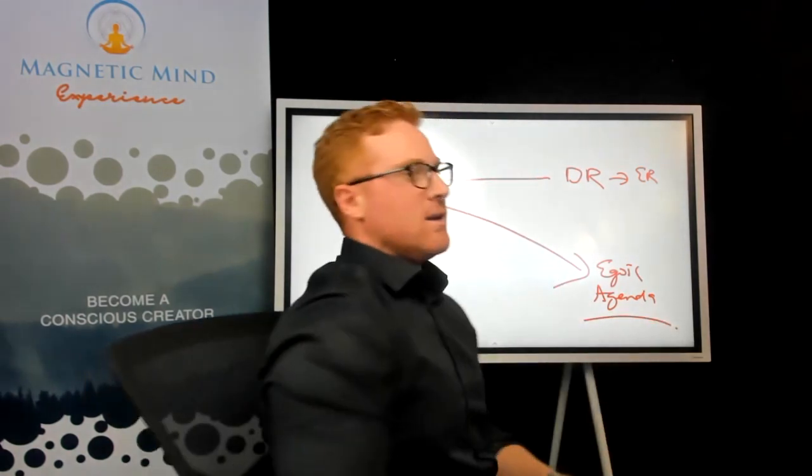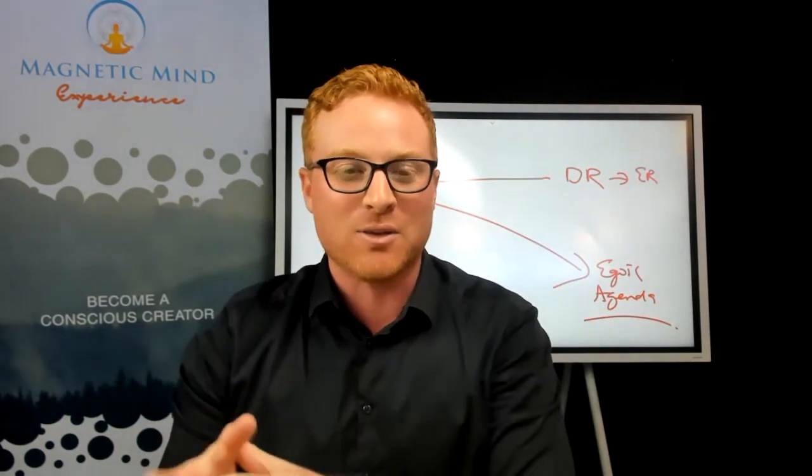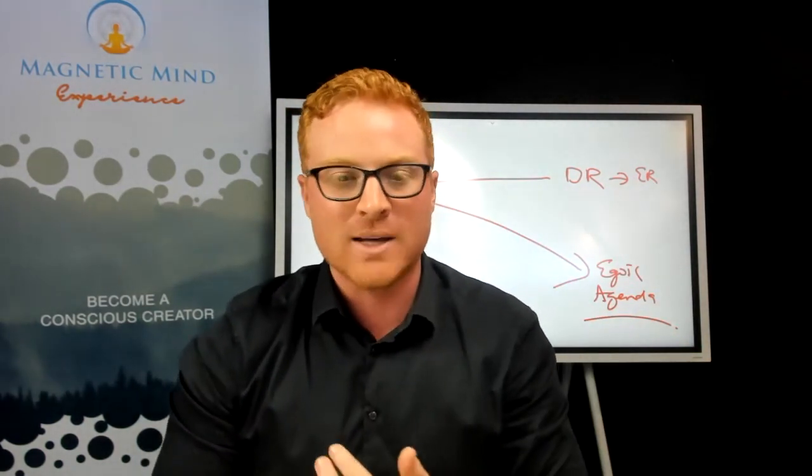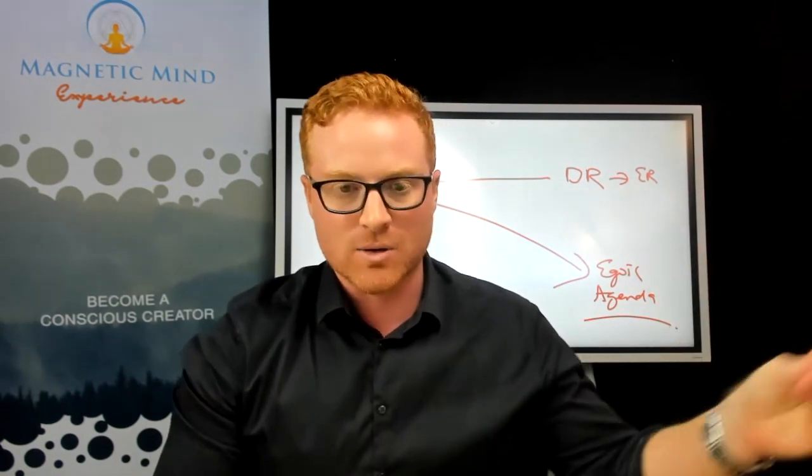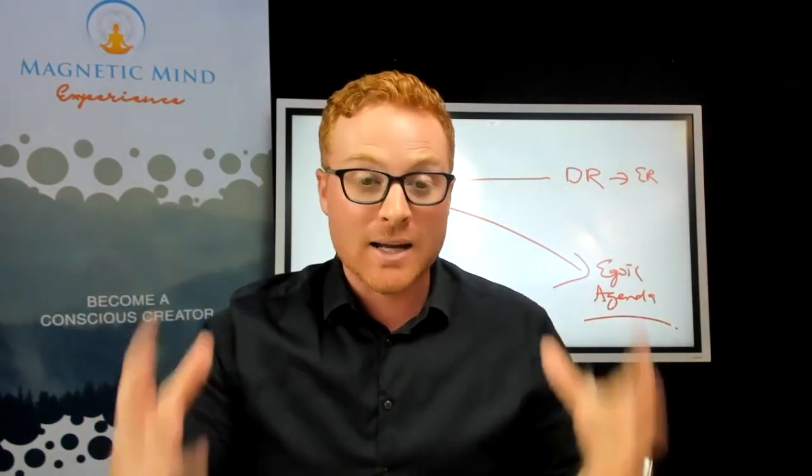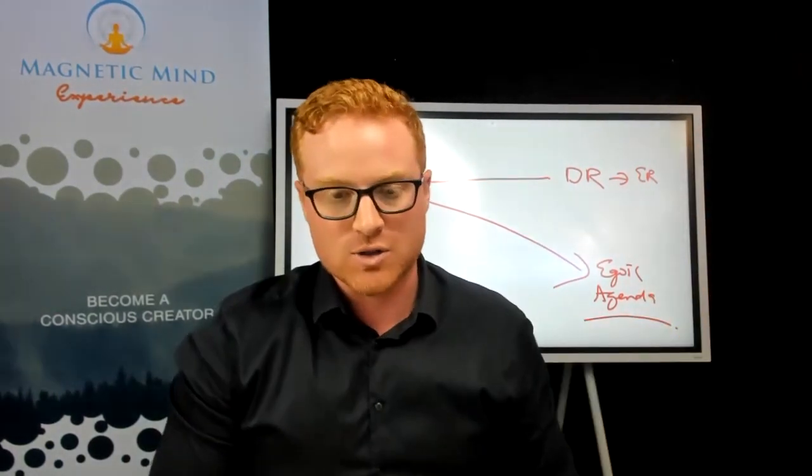Now, the egoic agenda is where instead of going for what it is that you want to create, you're doing other things. One might be to compensate for ways that you feel incomplete. Another one might be to create something to end up somewhere else. Anyway, there are actually seven different ways that you are in your egoic agenda instead of in your end result.